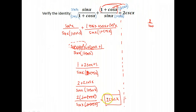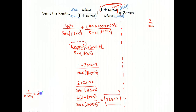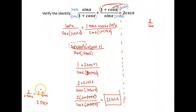Two over sine is the same as two times one over sine x, and one over sine x is cosecant. This looks crazy, but the more you work with these identities, the better you'll get, I promise.